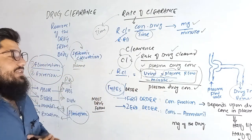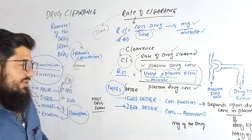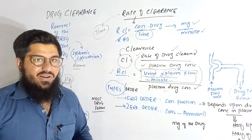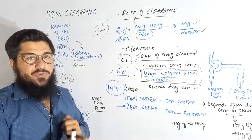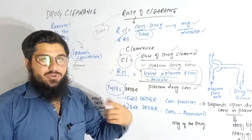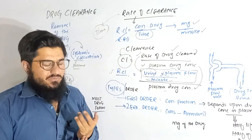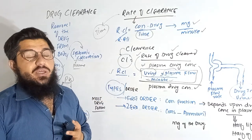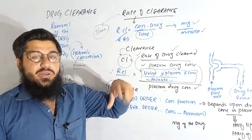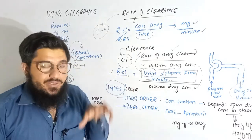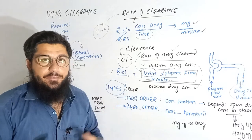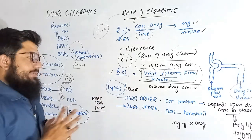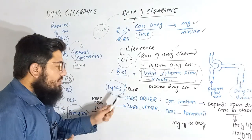The next point concerns order types: first order and zero order. Many students get confused when asked about these — for example, which order depends on drug concentration, or which one involves removal of a constant fraction of the drug. Let me clear all these confusions.